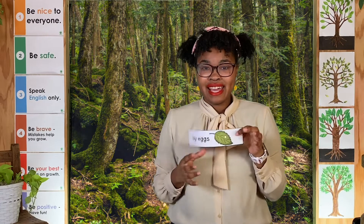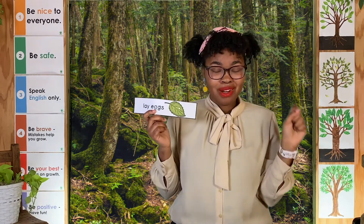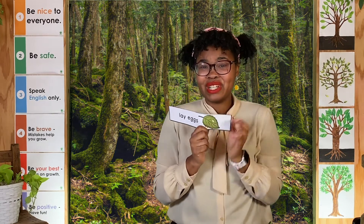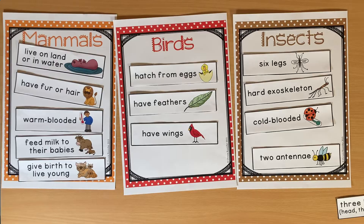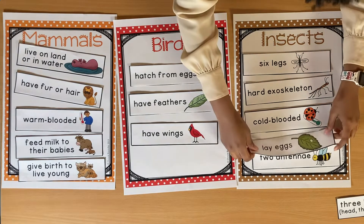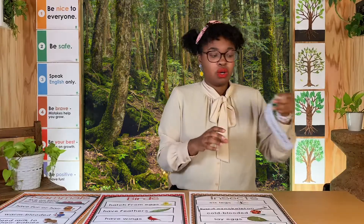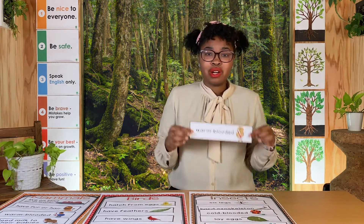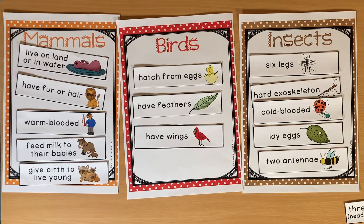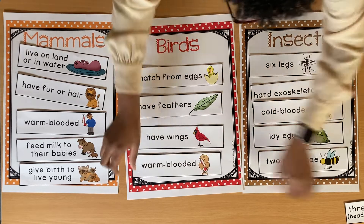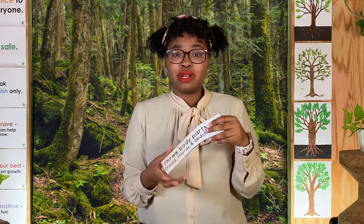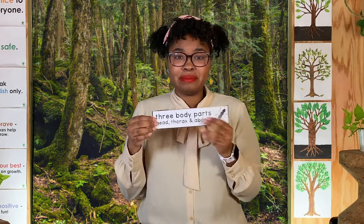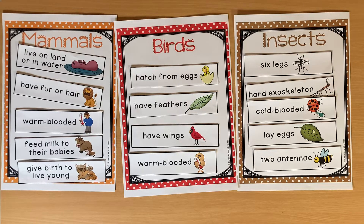Insects lay eggs too, but look at this tiny egg on the leaf — which one lays tiny little eggs like this? Insects do. Which classification is warm-blooded? Birds are warm-blooded. And the last one — which one has three body parts: a head, a thorax, and an abdomen? Insects do.